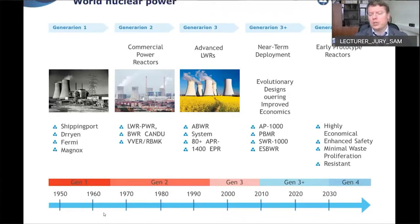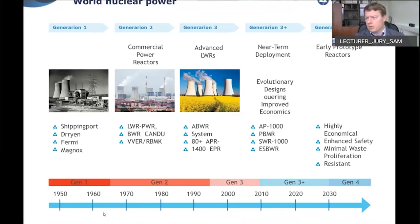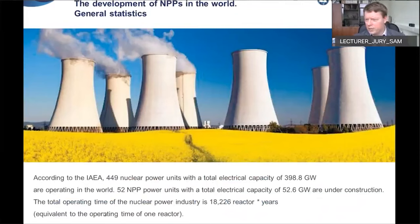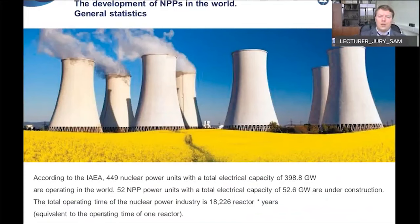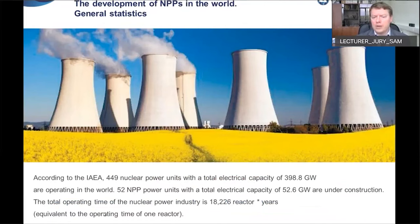Generation III encompasses nuclear power plants designed between Chernobyl and Fukushima Daiichi. After Fukushima Daiichi, the new Generation III+ incorporates lessons from all previous disasters into modern nuclear technology. Today, more than 450 nuclear power units are in operation worldwide, producing about 400 gigawatts. In the near future, 52 new nuclear power units are planned to start, increasing global capacity to approximately 500 gigawatts.